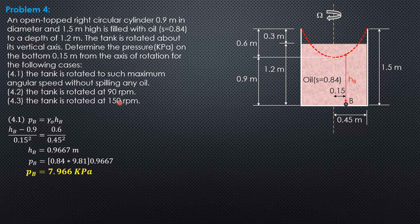For the second part, the tank is rotated at 90 rpm. Let's compute for the height H2 first using the formula 0.0005589 omega squared, 90 squared, times radius 0.45 squared. So H2 is equal to 0.9167 meter, which is less than 1.5. So the vortex is still above the bottom center and it is as shown in the figure.